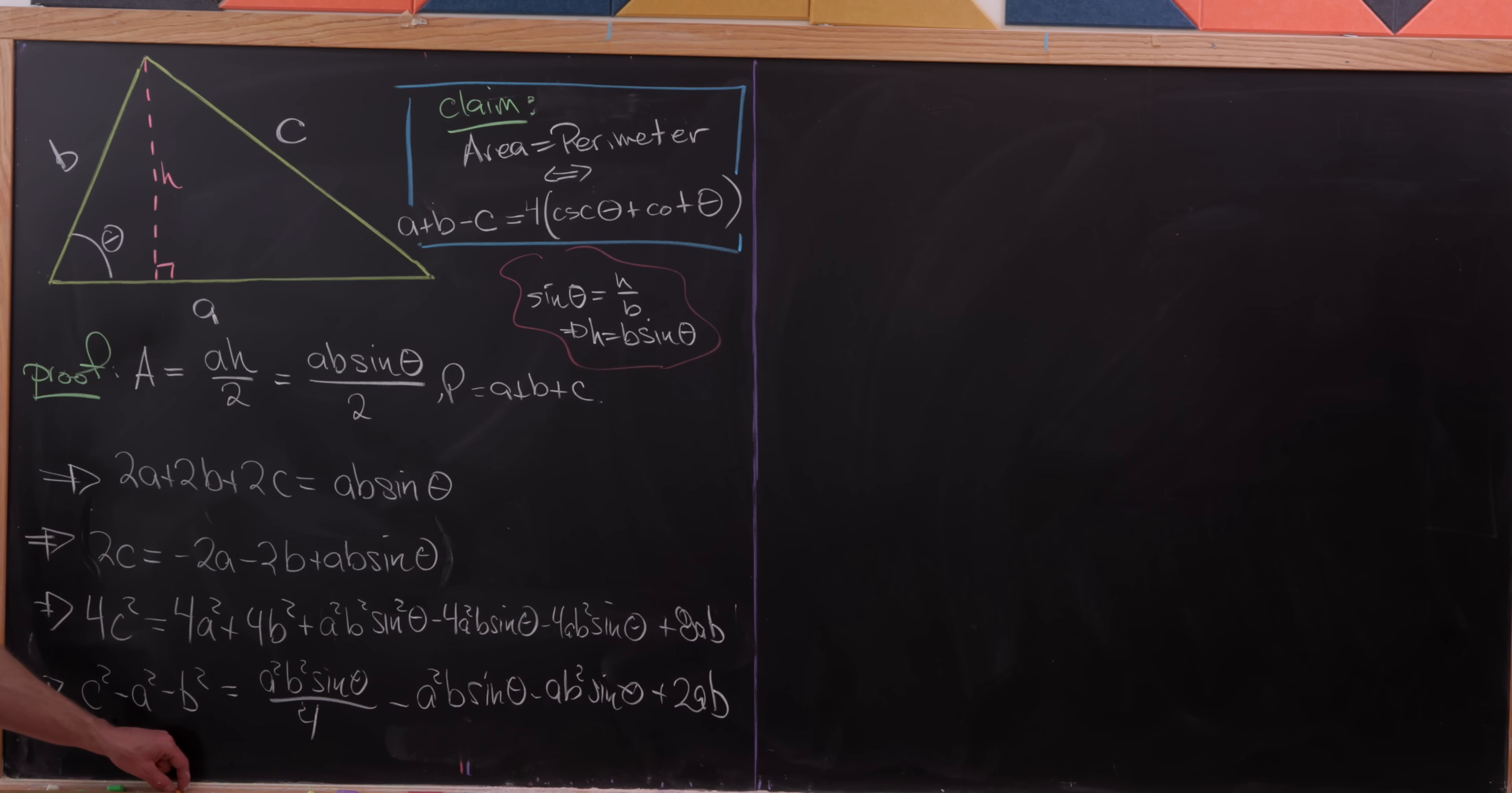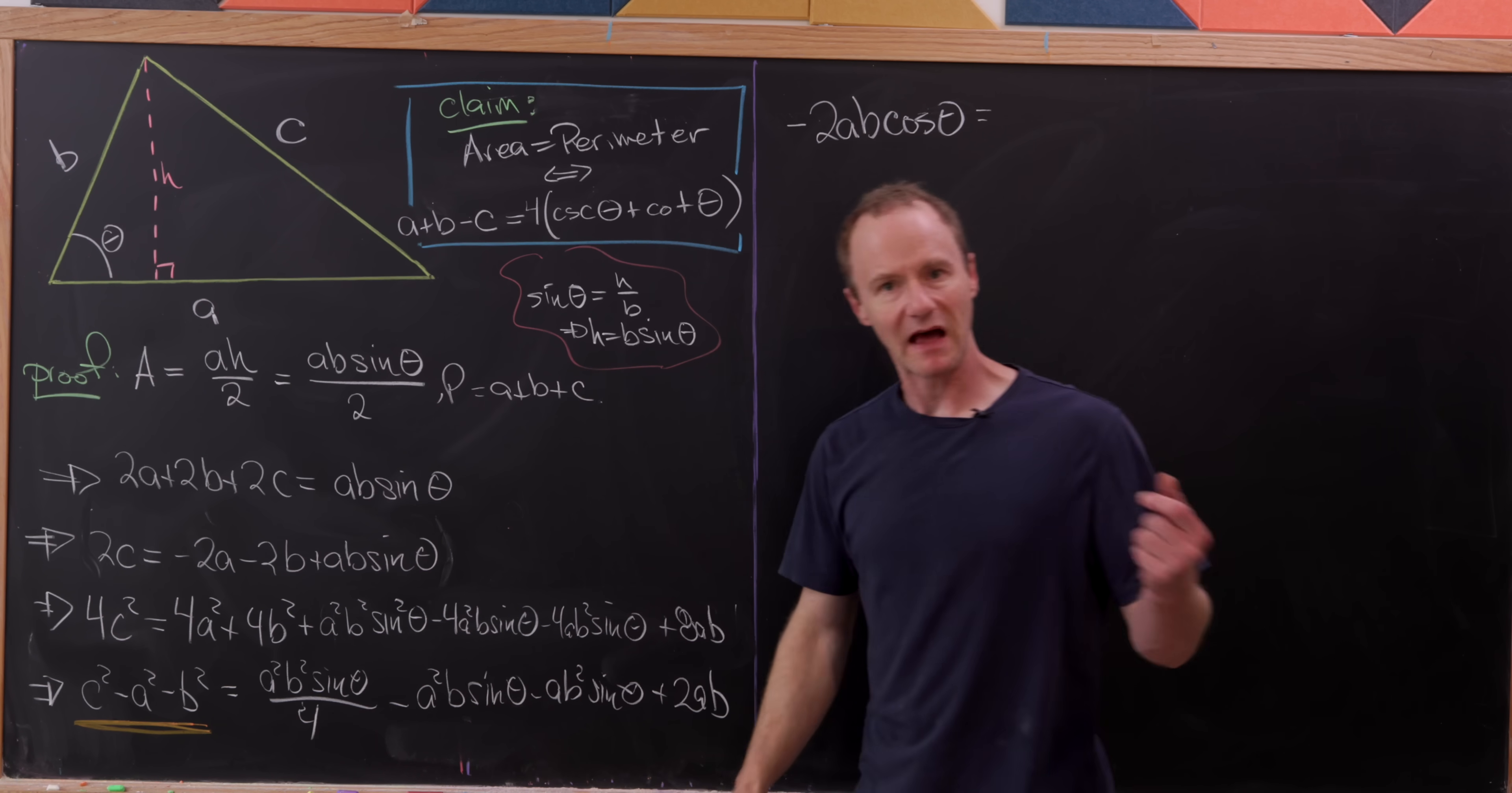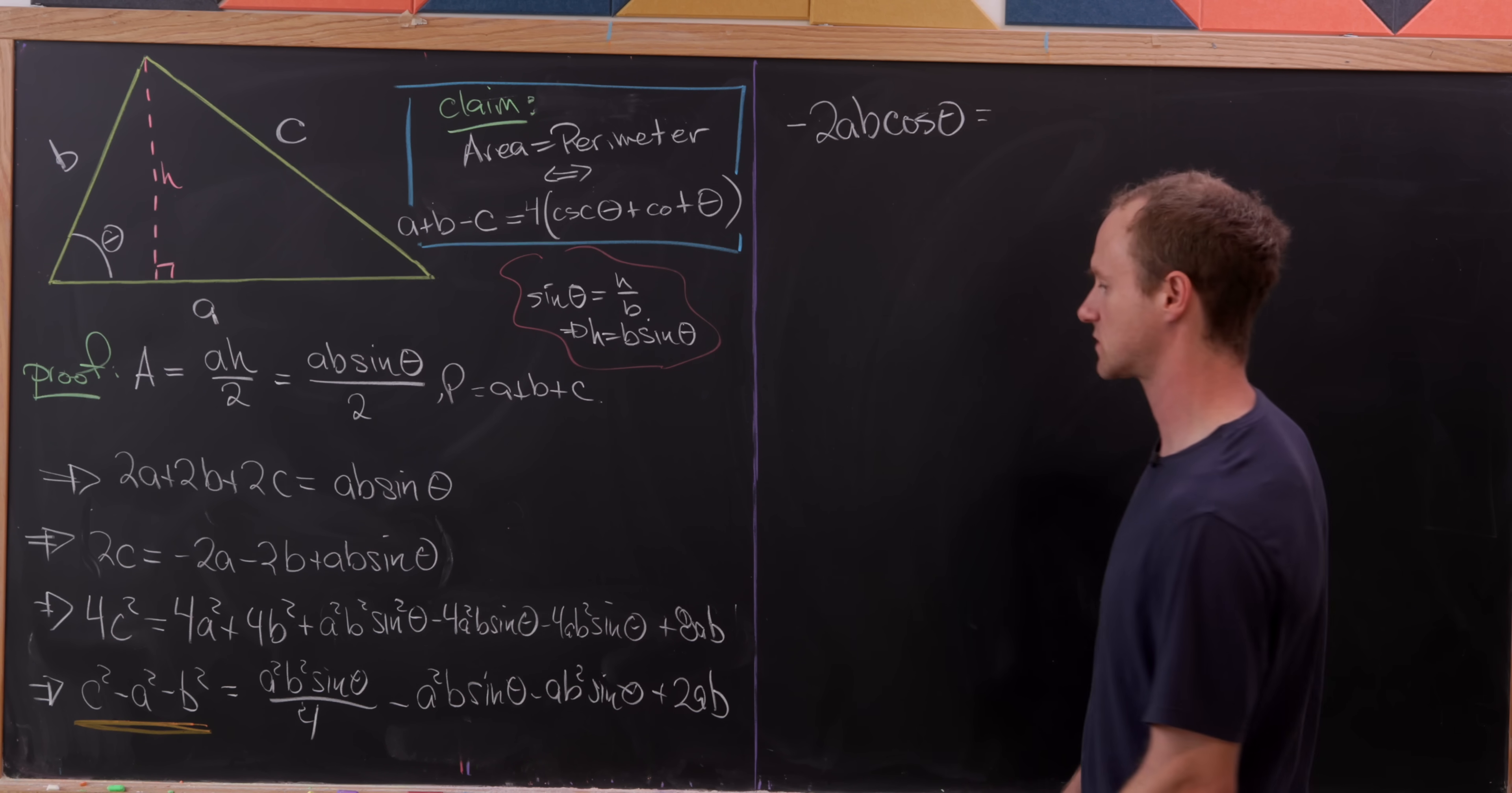And now this is where we're going to use the law of cosines to rewrite this left hand side. And in fact, the law of cosines will say that that is equal to minus 2 times a times b times cosine theta. So I'll let you guys recall or look up what the law of cosines says if you need to. And then while I'm at it, since I've got a times b over here on the left, I'll factor out a times b over on this right.